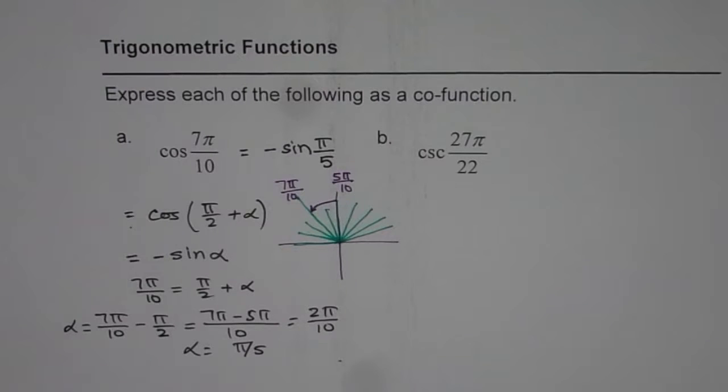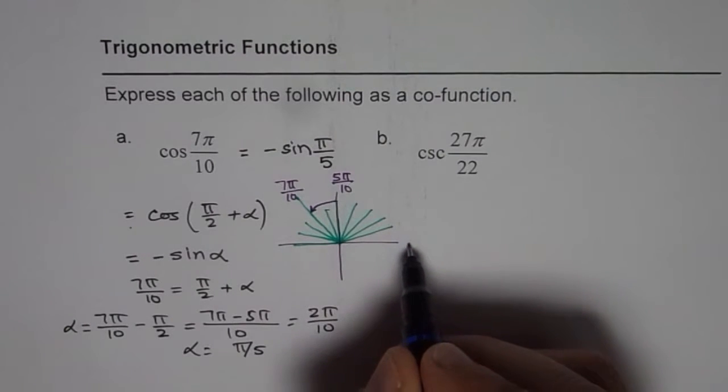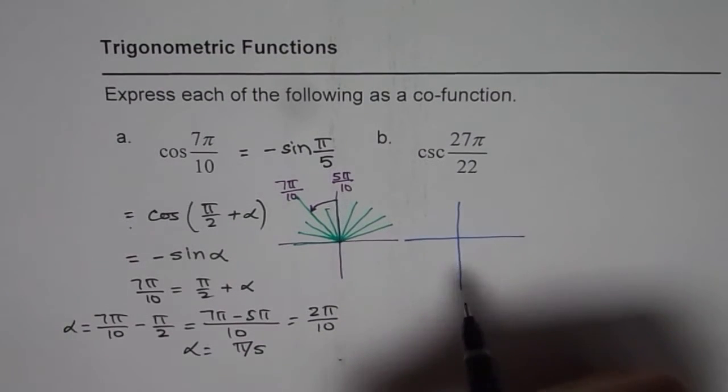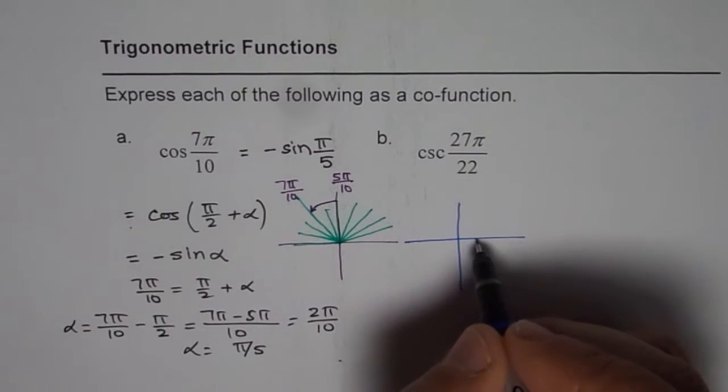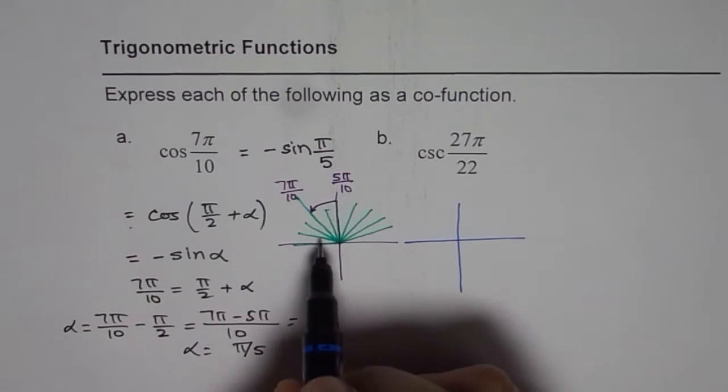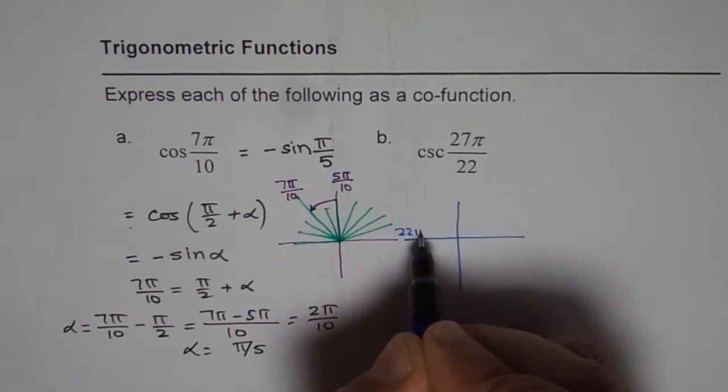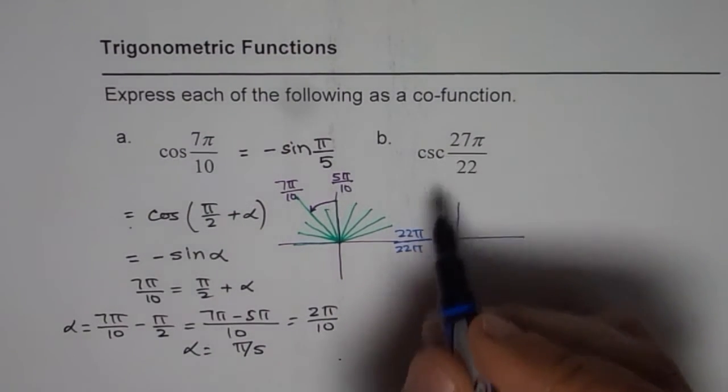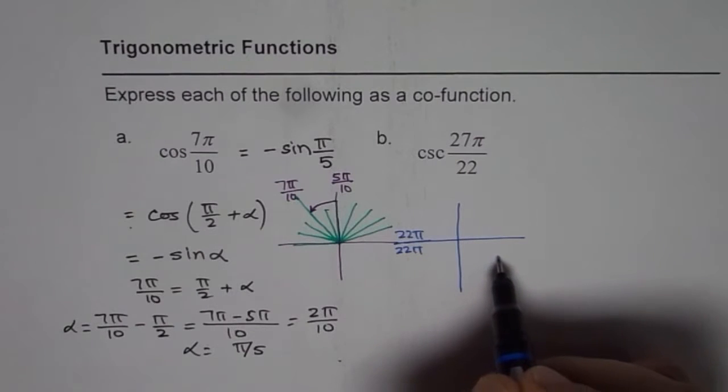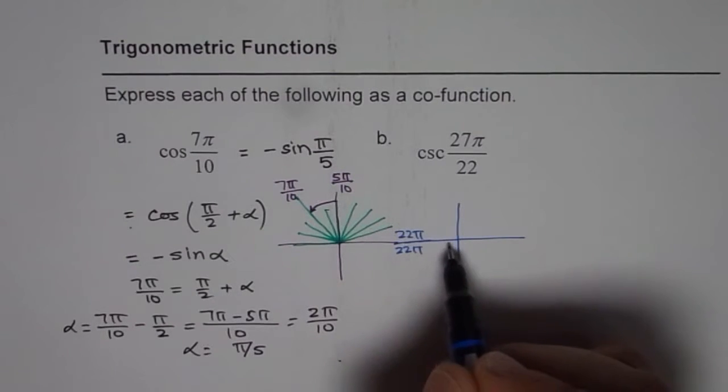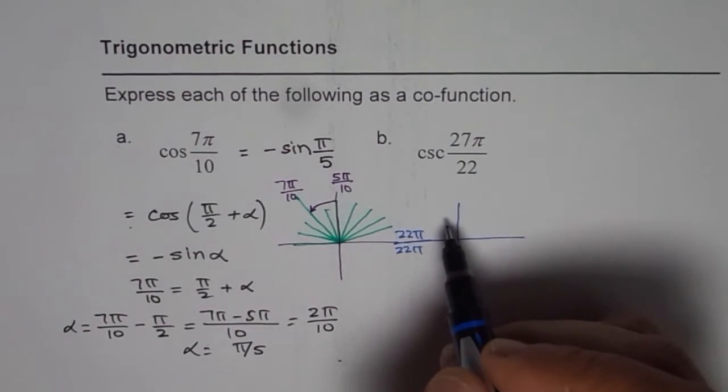Now let us look into the next example, which is cosecant 27π/22. Now it really means that we are dividing π into 22 equal parts. So 22 parts of the π. So when we are saying 27, so 22 plus 22 will be 24. Each has 11. So 27 means 5 more.